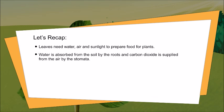Let's recap. Leaves need water, air, and sunlight to prepare food for plants. Water is absorbed from the soil by the roots and carbon dioxide is supplied from the air by the stomata.